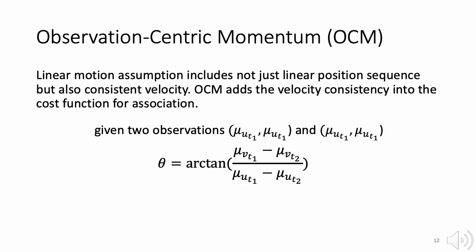On the other hand, OCM is proposed to leverage velocity consistency from the linear motion assumption as an additional cost for association, and the velocity is calculated by observations instead of Kalman filter estimations.